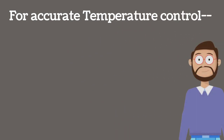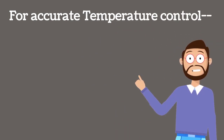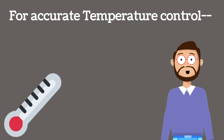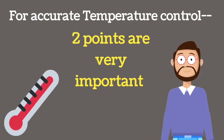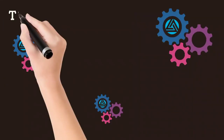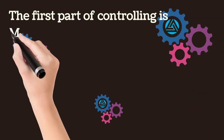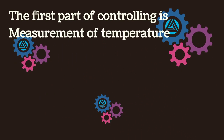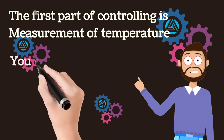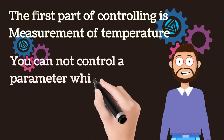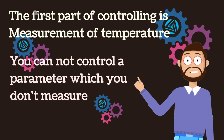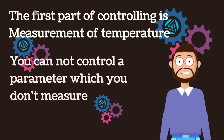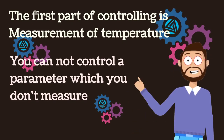For accurate temperature control, two points are very important. The first part of controlling is to measure the temperature. Measuring is important because you cannot control a parameter which you don't measure. Just think about it — how can you control a parameter which you don't measure?